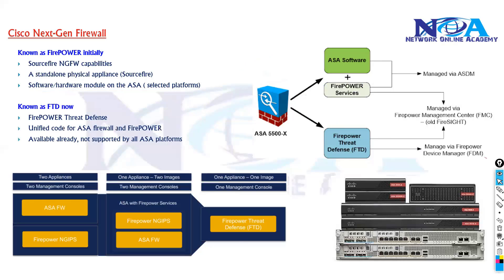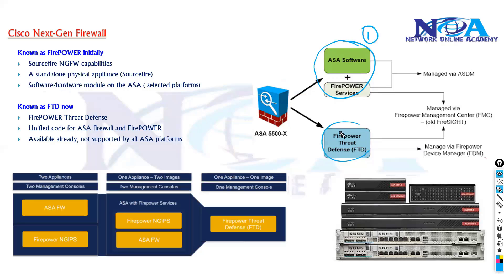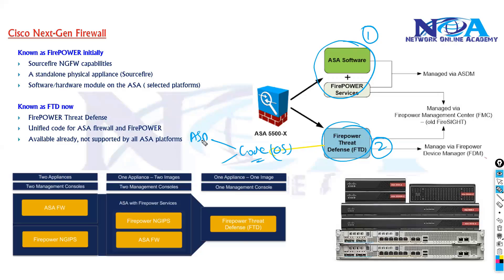Cisco also has a dedicated product. There are two options: you can combine your ASA with Firepower services, or you can buy a dedicated product called FTD — the Firepower Threat Defense — which has a unified code. Whatever operating system runs inside this FTD supports both the ASA features as well as the Firepower features.